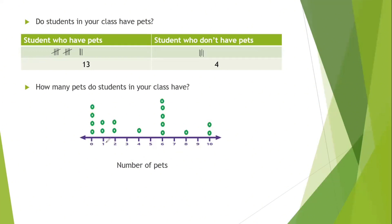Here zero pets, one pet, two pets, three pets, and so on. I can understand that here one, two, three, four students have no pets. Two students, each one has one pet. Two students, each one has two pets. One student has four pets. Five students, each one has six. One student has eight pets. Two students have ten pets.